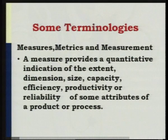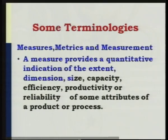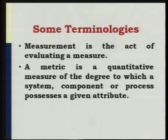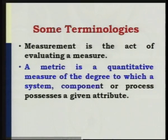We need to clearly distinguish between three aspects: measure, metric, and measurement. A measure provides a quantitative indication of the extent, dimension, size, capacity, efficiency, productivity, or reliability of some attribute of the software product or process. Measurement is the act of evaluating the measure. A metric is the quantitative measure of the degree to which a system, component, or process possesses a given attribute. Metric is a major aspect in software engineering, and software metrics will be explained in detail as lectures proceed.